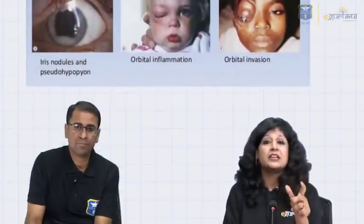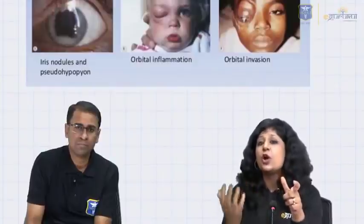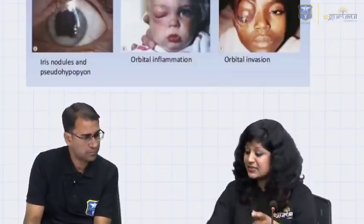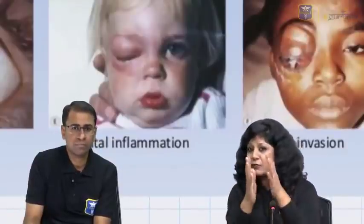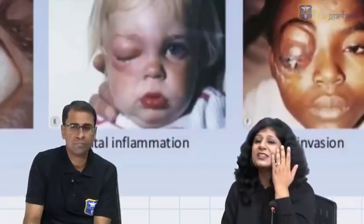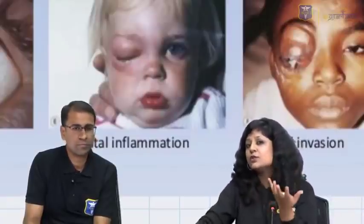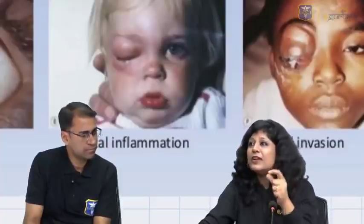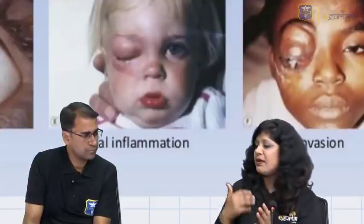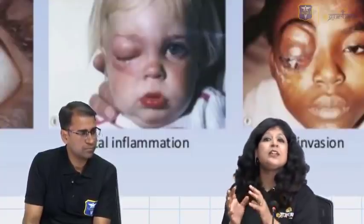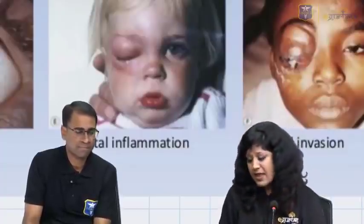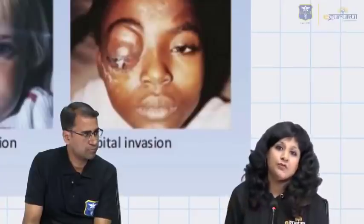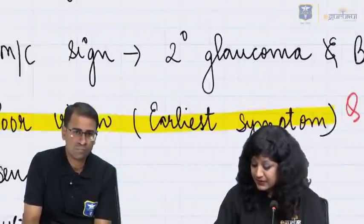If a baby has glaucoma not responding to treatment, keep retinoblastoma as a possibility. There are cases where iris nodules are present — a pseudo-hypopyon, pseudo-tumor, or inflammatory-type condition can also be a presentation. Many cases present just like orbital inflammation, and on first sight you cannot say it is a tumor — it looks like orbital cellulitis. Since the most common cause of unilateral proptosis is orbital cellulitis, we admit such babies. There should be a high degree of suspicion; it is always better to over-diagnose than under-diagnose. In the most severe cases, orbital invasion is present.